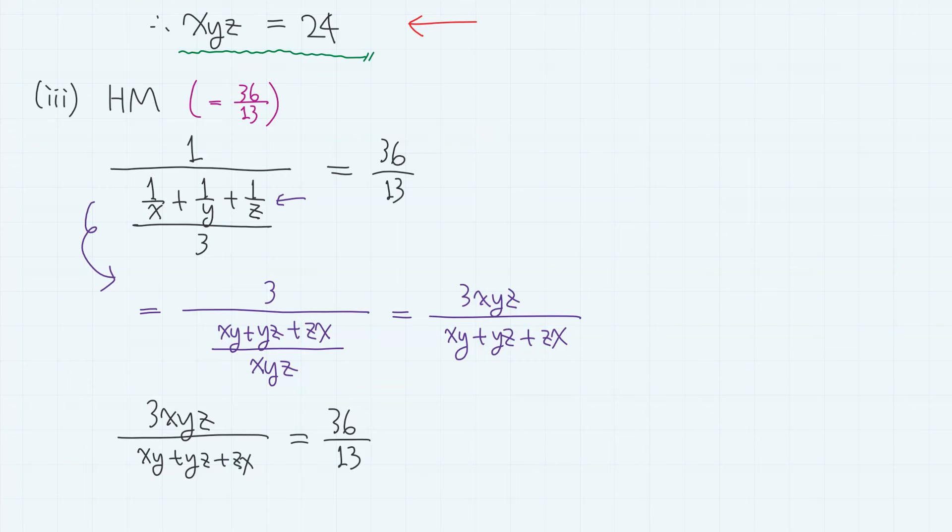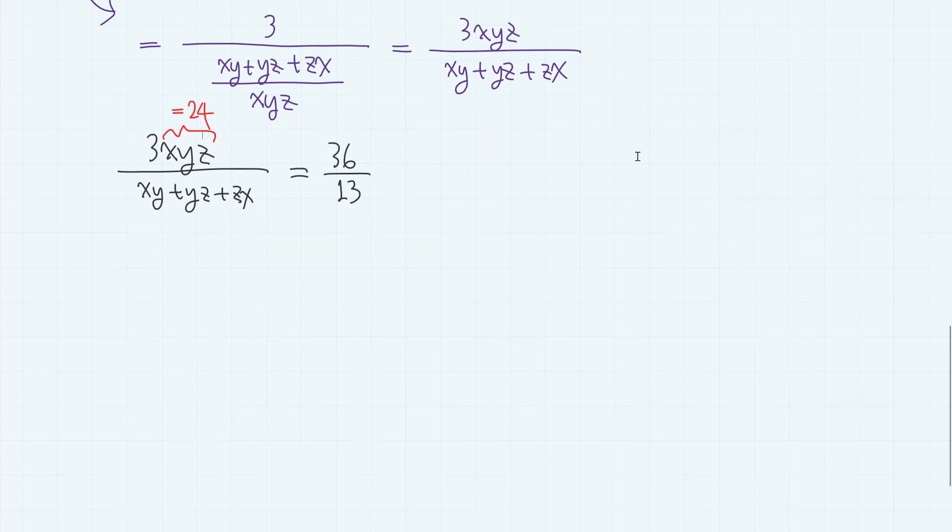And from here, we have already obtained that xyz equals 24. So, we have 3 times 24 divided by xy plus yz plus zx equals 36 over 13.